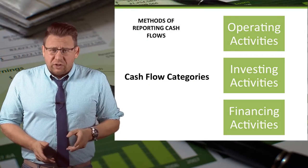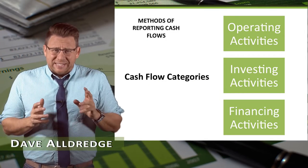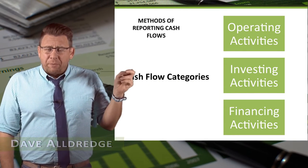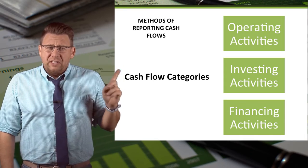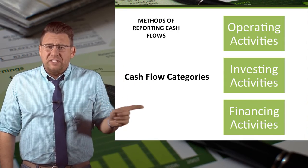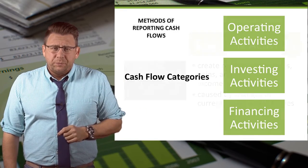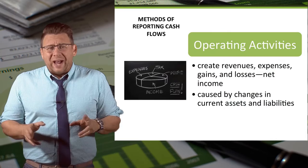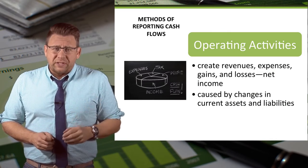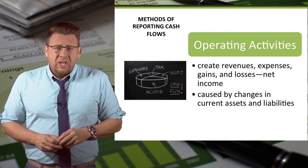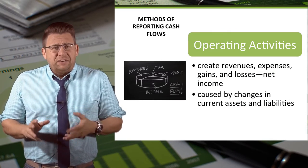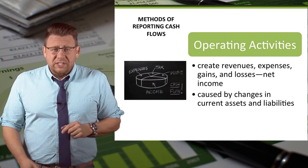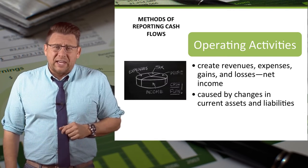The statement of cash flows is organized into three categories: operating activities, investing activities, and financing activities. Operating activities are widely considered the most important of the three sections. These activities create revenues and expenses as well as current assets and liabilities.